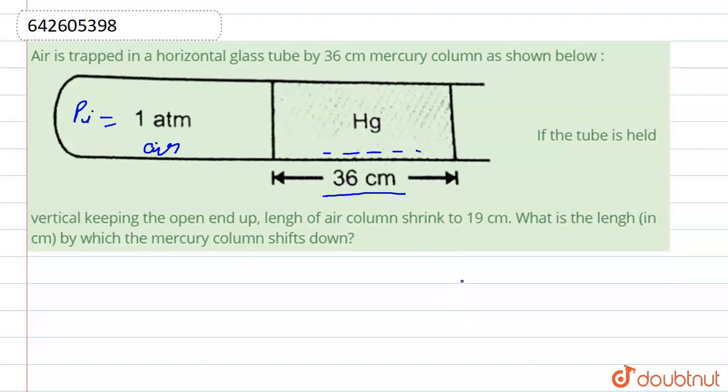So in the question it is said that if the tube is held vertical, so we draw a tube vertical. If the tube is held vertical, so we assume that its initial